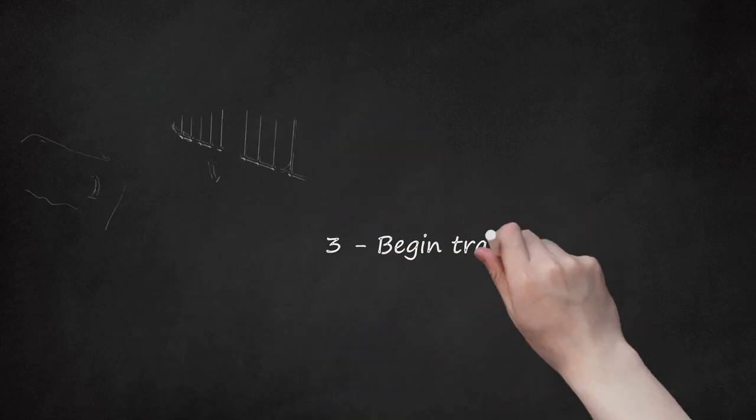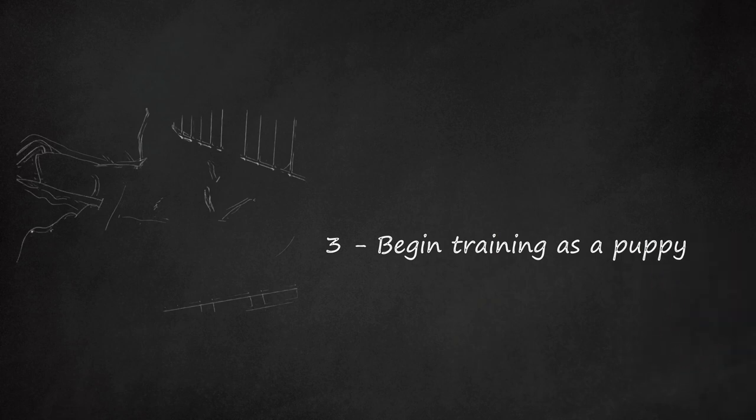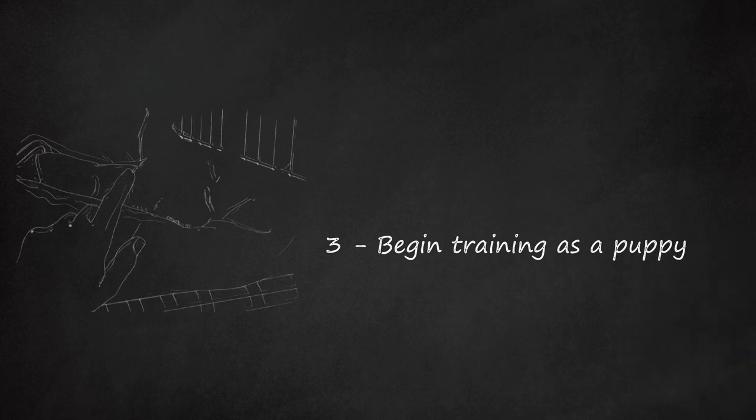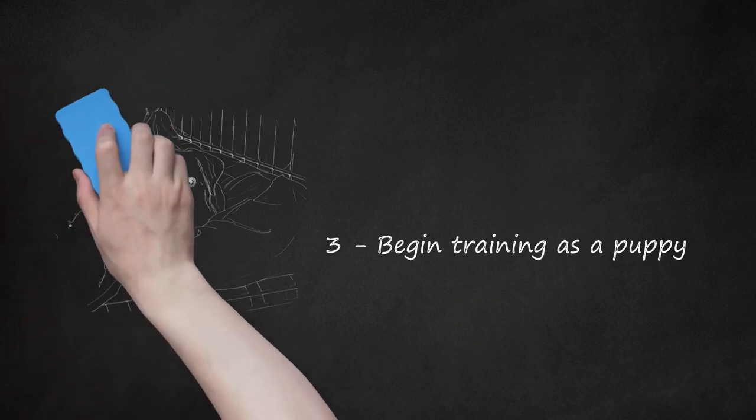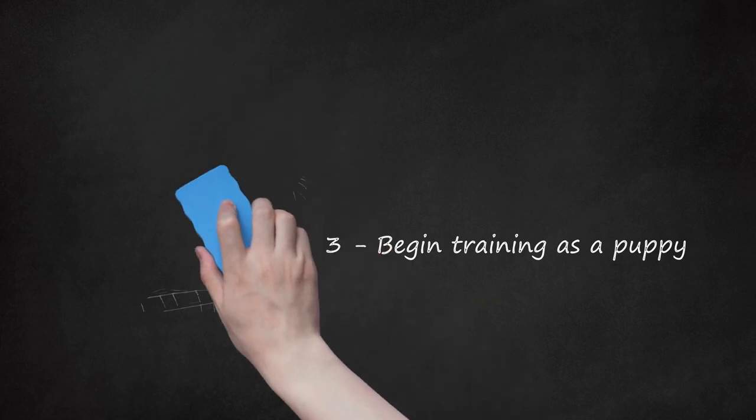Begin training as a puppy. Great Danes want to please their owners, so they can easily learn tricks, be crate-trained, and be house-trained. It can be very challenging to control an unruly dog of its size, so it is important to start obedience training when they are young. Because they are strongly people-oriented and strive to please, they often participate in agility courses in a variety of dog competitions.